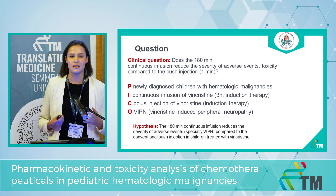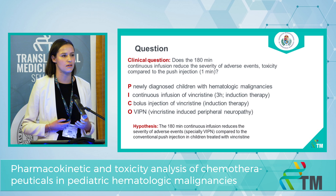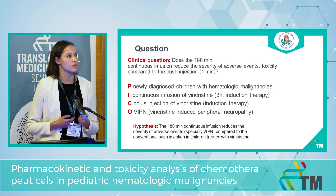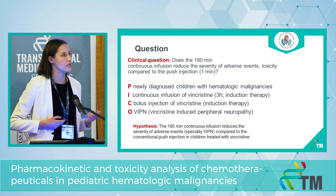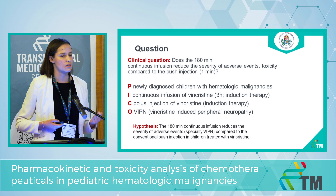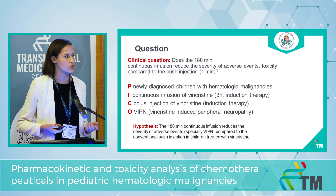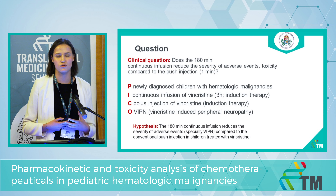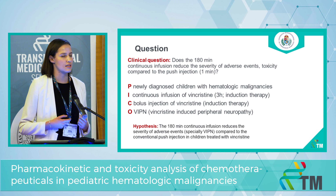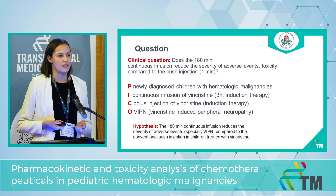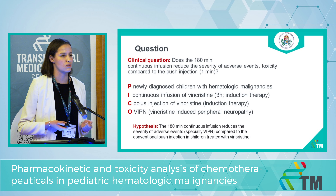Our clinical question is: does the continuous infusion reduce the severity of toxicity compared to the push injection? This is the PICO of our randomized controlled trial. We want to include newly diagnosed children with hematologic malignancies, especially acute lymphoid leukemia and Hodgkin disease. The intervention is continuous infusion, the comparison is bolus injection, and the primary outcome is the severity of Vincristine-induced peripheral neuropathy. Our hypothesis is that the 180-minute-long infusion reduces the severity of adverse events compared to the conventional administration.